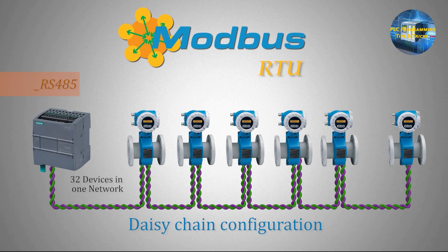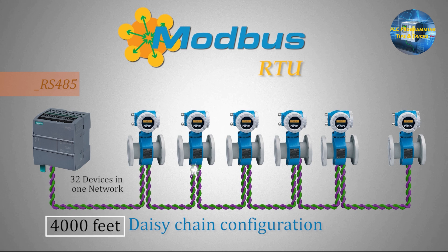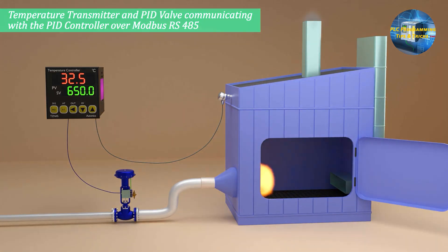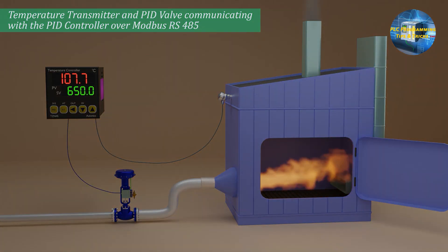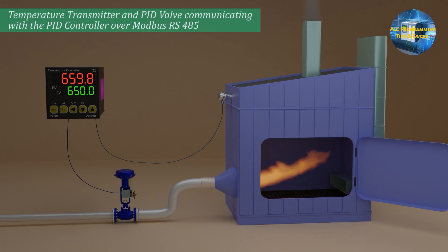Here's the key point: RS-485 is half-duplex, meaning communication can only go in one direction at a time. But it's still super reliable over long distances — sometimes up to 1200 meters or 4000 feet. In summary, Modbus RTU is used when devices need to communicate in harsh environments, like factories or plants, over long distances, and where reliability is more important than speed.